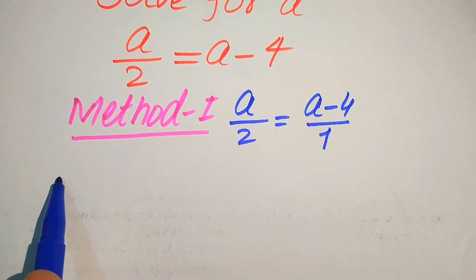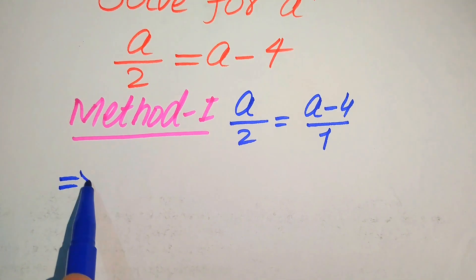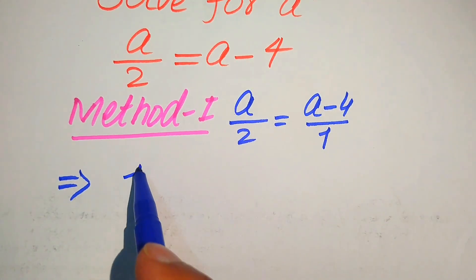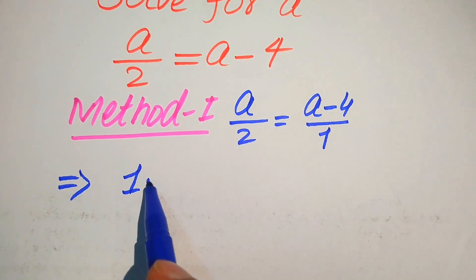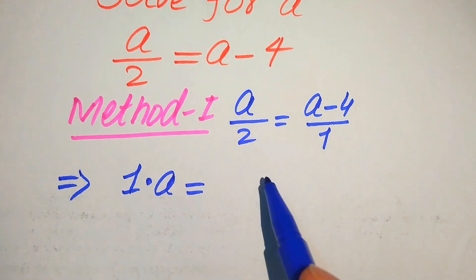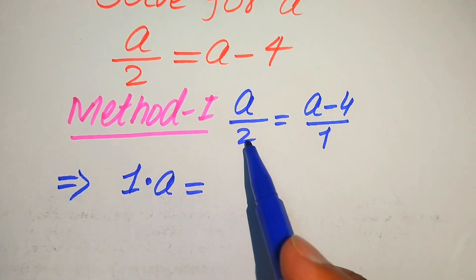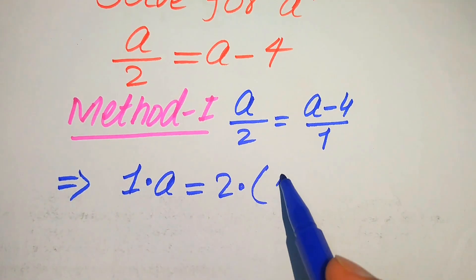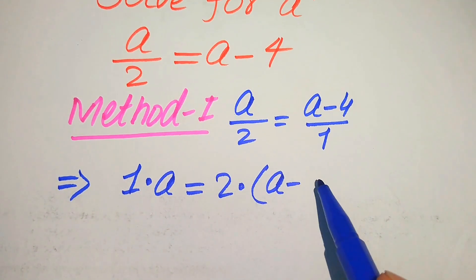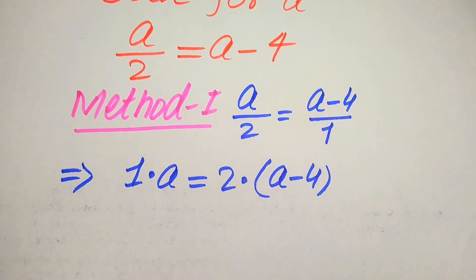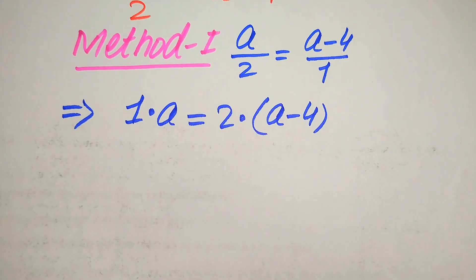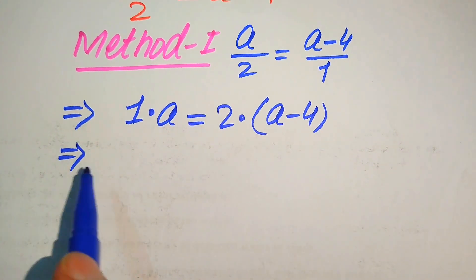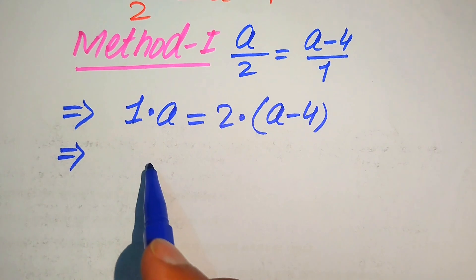Here we need to cross multiply the terms. We multiply 1 with a, written as 1 multiplied by a, is equals to 2 multiplied by a minus 4. Now in the next step we need further simplifications.